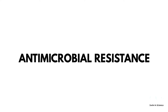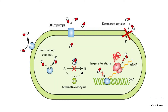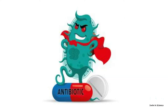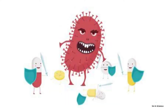Antimicrobial resistance occurs when microbes evolve mechanisms that protect them from the effects of an antimicrobial agent. Pathogens no longer respond to the antibiotics designed to kill them. It means pathogens continue to grow and cause disease even in the presence of antibiotics.